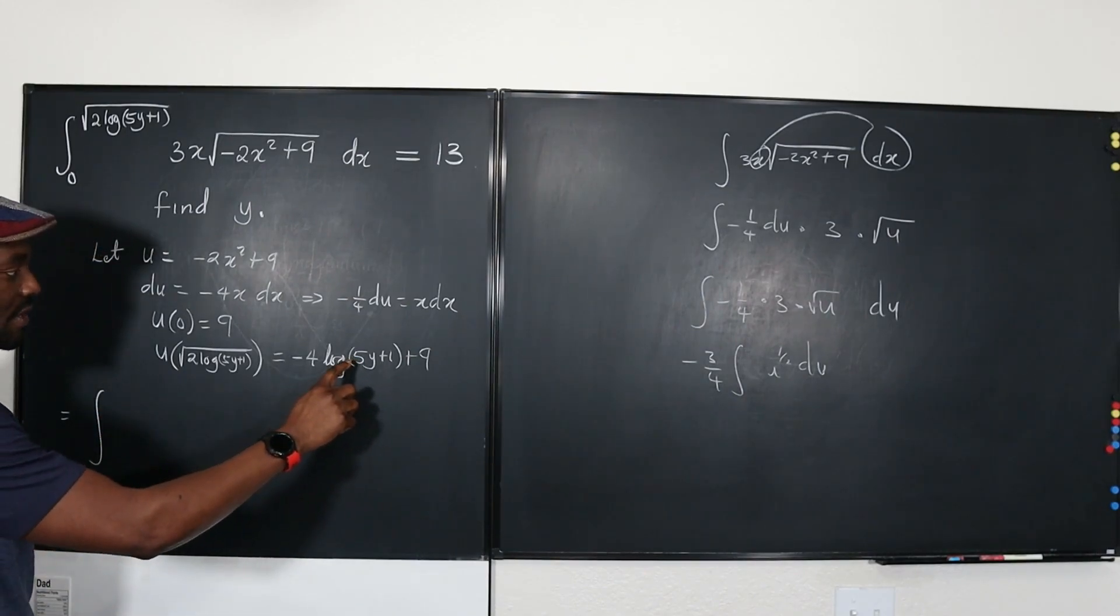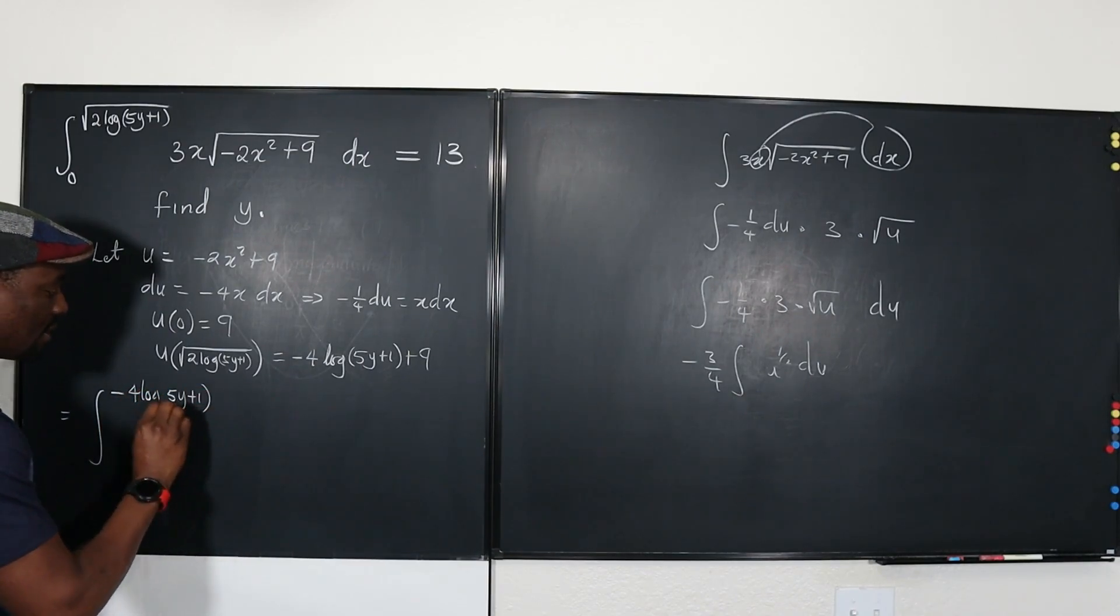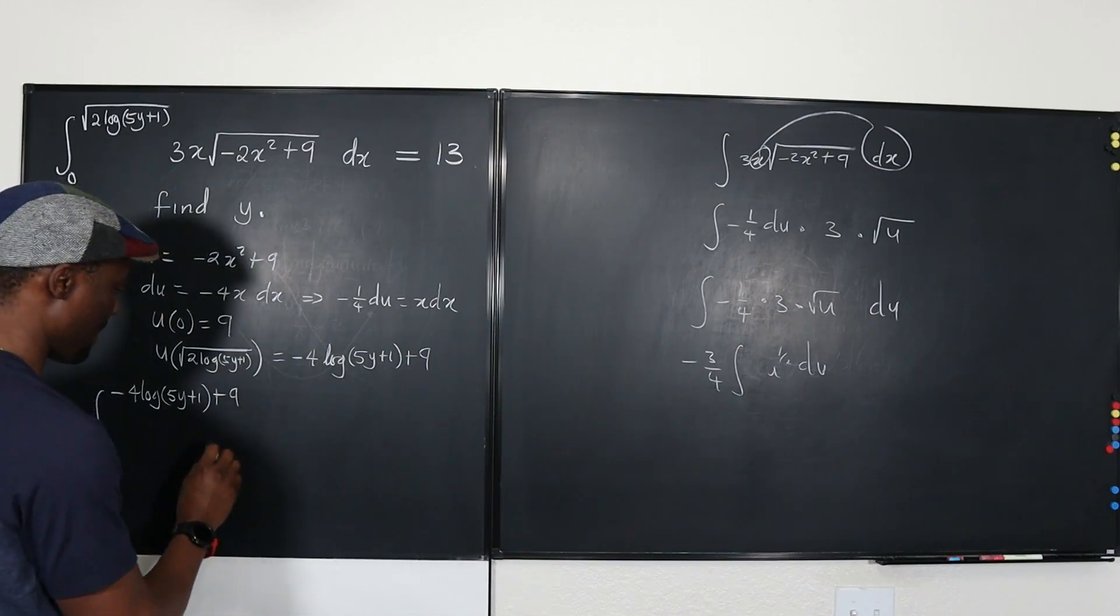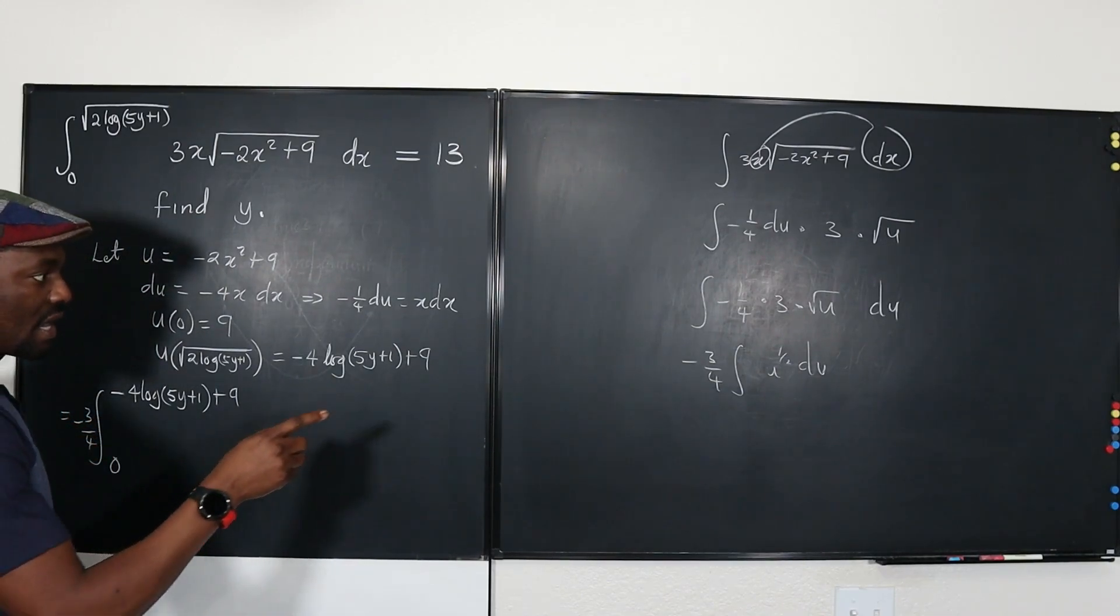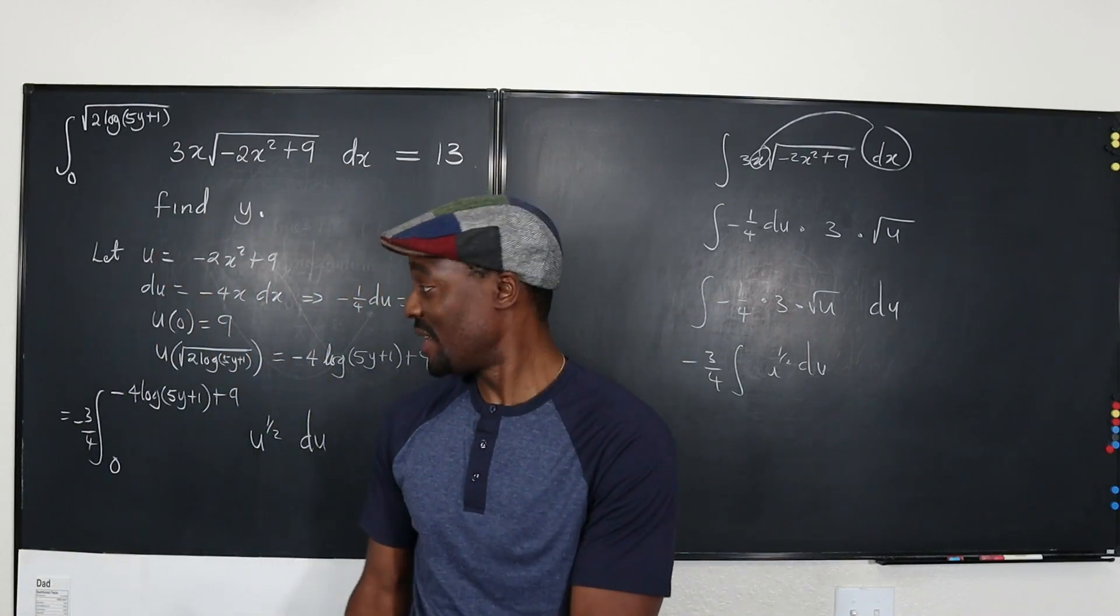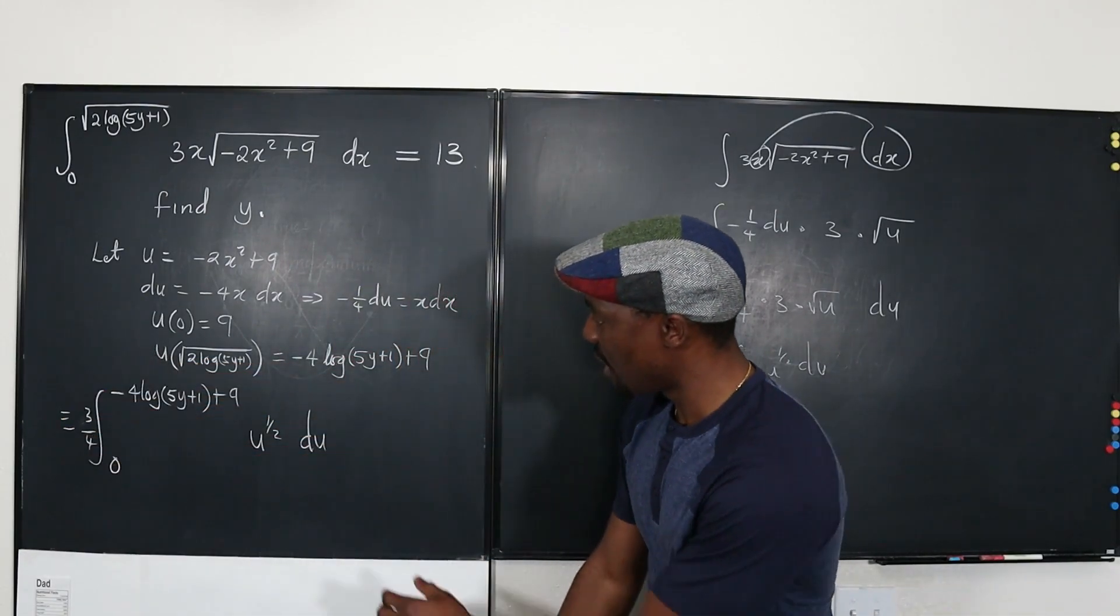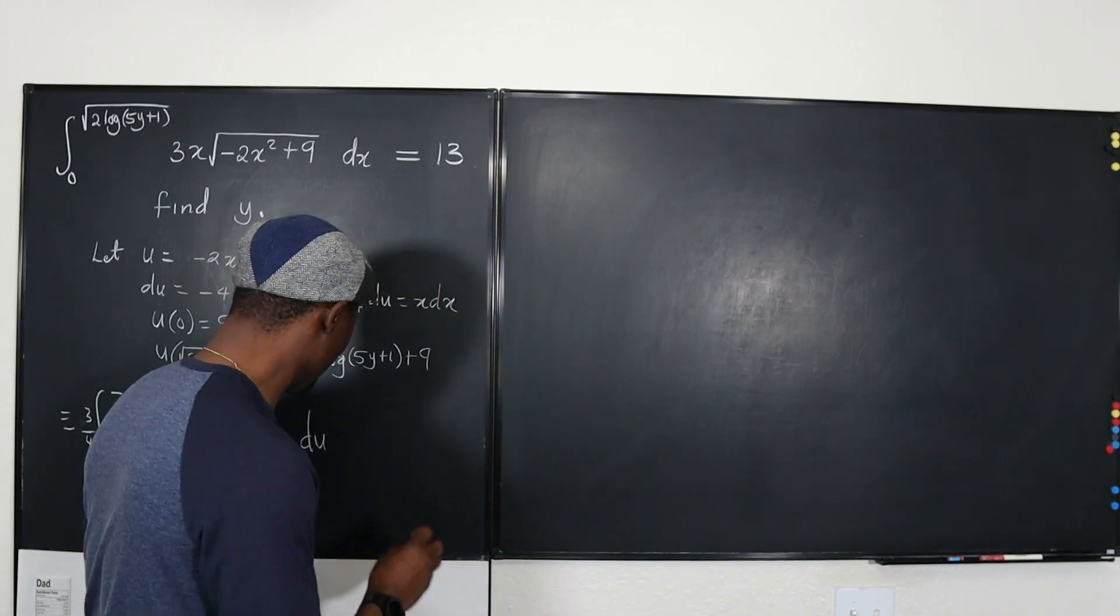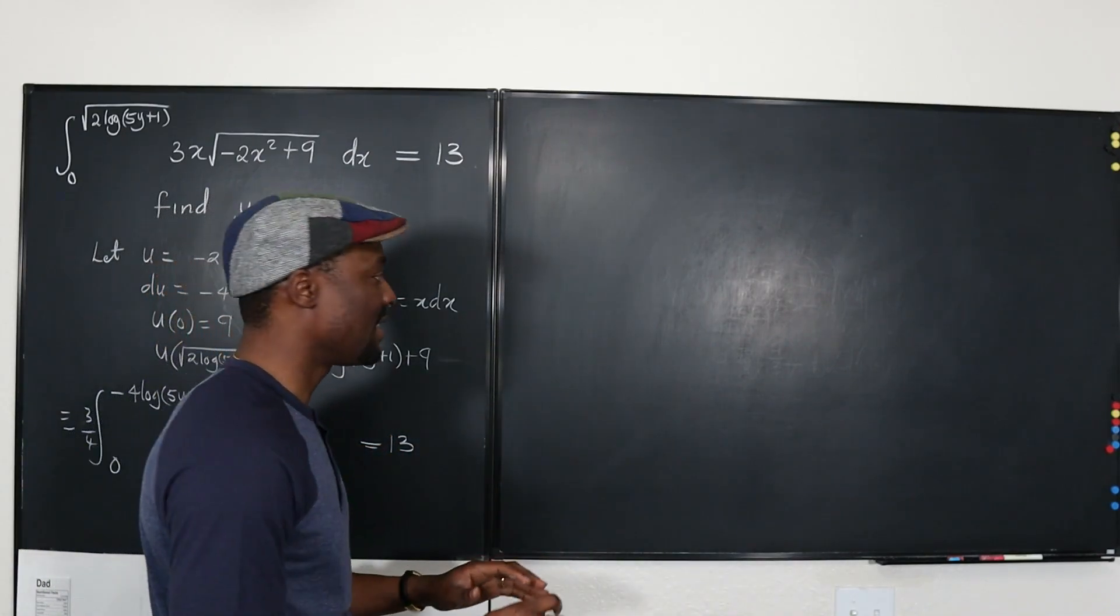Let's go here. We have the upper bound is now going to be negative 4 log 5y plus 1 plus 9. And the lower is going to be 9. And here we're going to bring out the negative 3 over 4. So I'm going to put that here, negative 3 over 4. And we have the integral of u to the 1 half du. This is where the work is nastiest. Once you're able to get this organized, once you're able to write this, then you can just take the integral of this. You can see that it's a lot simplified. And remember that everything we've done is equal to 13. This is equal to 13. So we're going to maintain that.